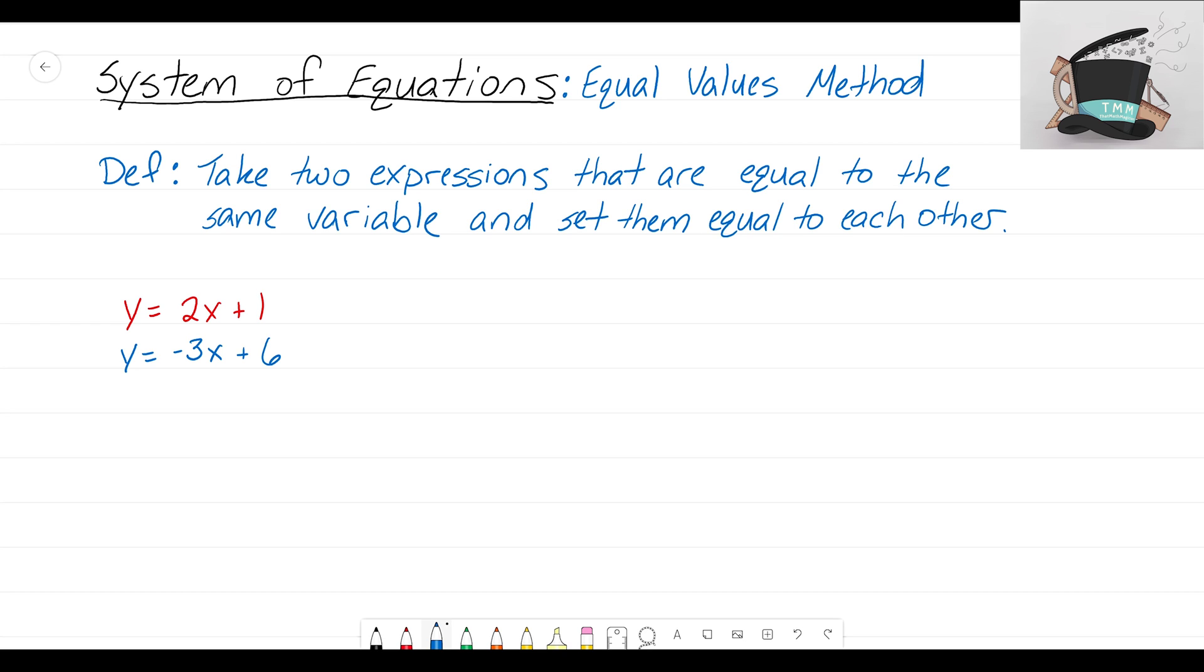Let's take this definition and apply it to our system of equations. It says to take two expressions that are equal to the same variable. Hopefully we can start to notice that we have this expression here, 2x plus 1, and it is equal to y. We also see here this expression, negative 3x plus 6, is also equal to y.